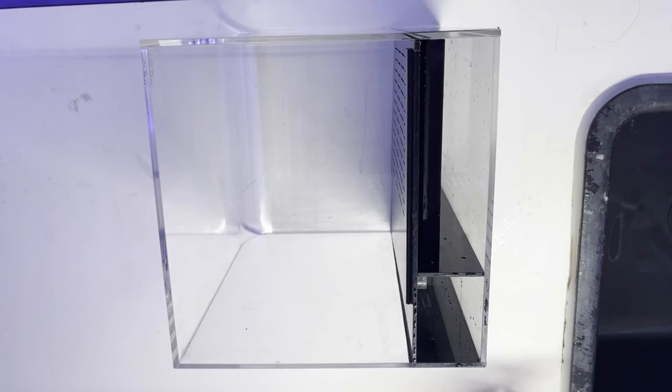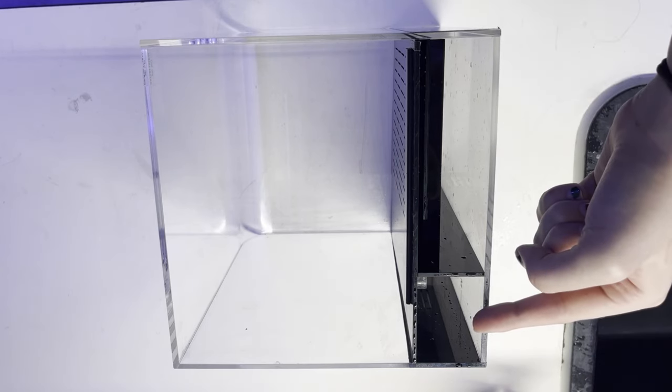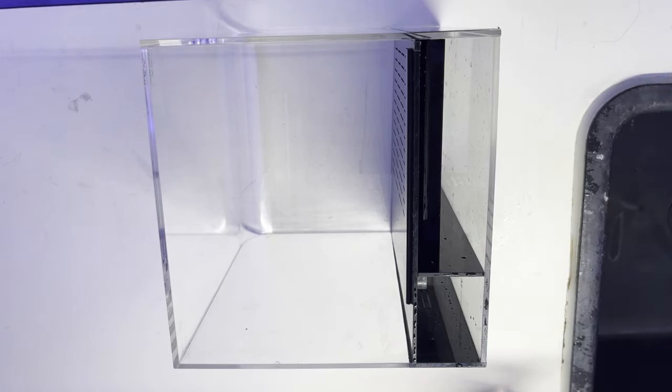So here is the tank. It's separated into three different sections: the jellyfish compartment where the jellies will live, the filtration compartment for the sponges and bio-media, and then the return pump compartment, where the filtered water will be pumped back into the tank.